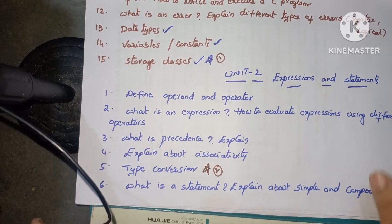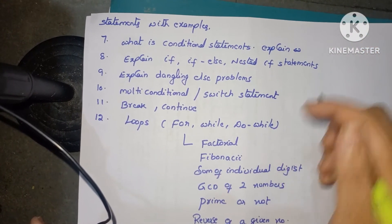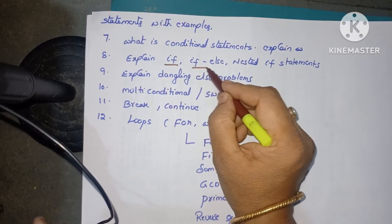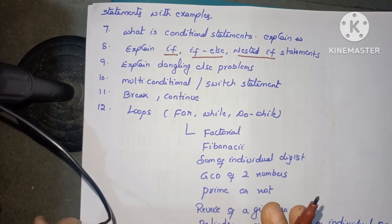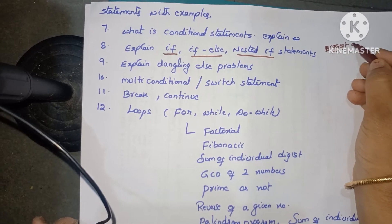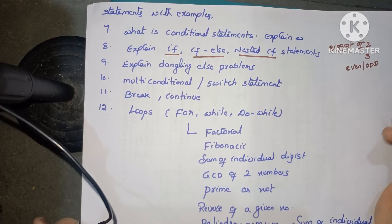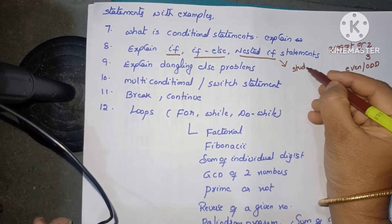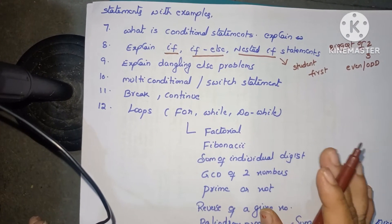Next: 'What is a statement?' and 'Explain simple and compound statements with examples.' These are very important questions. 'What is a conditional statement?' — covering if, if-else, and nested if statements with example programs. Example programs include: biggest of two numbers, biggest of three numbers, checking if a given number is even or odd. For nested if: a student grading program to find first class, second class, or third class division.